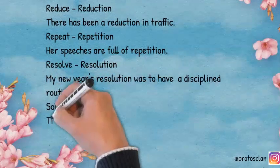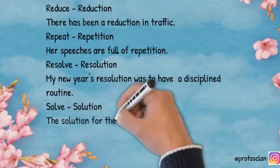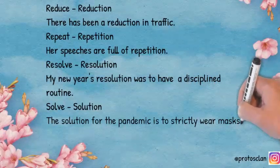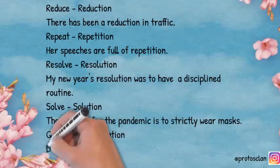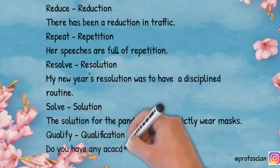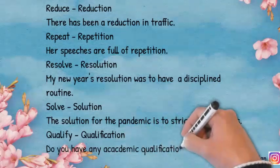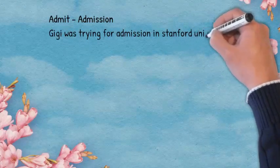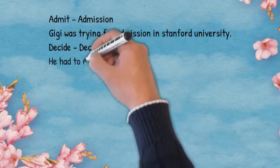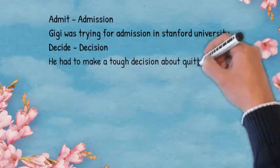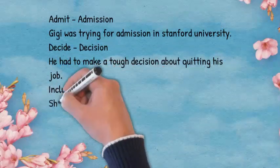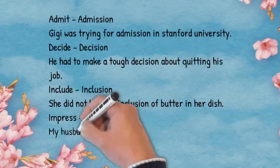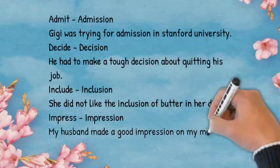Solve — Solution: The solution for the pandemic is to strictly wear masks. Qualify — Qualification: Do you have any academic qualification? Admit — Admission: Gigi was trying for admission to Stanford University. Decide — Decision: He had to make a tough decision about quitting his job. Include — Inclusion: She did not like the inclusion of butter in her dish. Impress — Impression: My husband made a good impression on my mother.